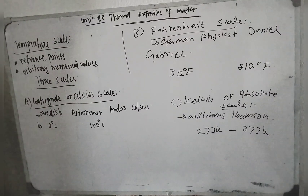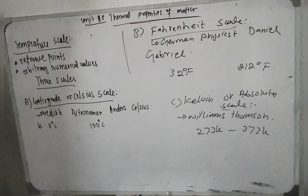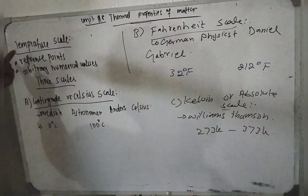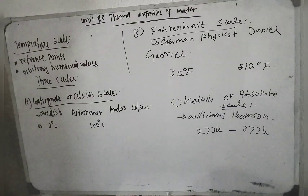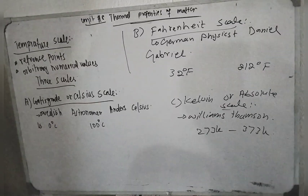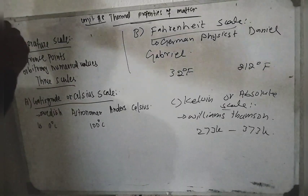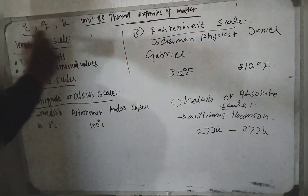Temperature — which thermometer, which branch of thermodynamics — we will discuss. Now our topic is temperature scales. There are three types of temperature scales. We measure temperature using these scales: degree Centigrade, degree Fahrenheit, and Kelvin.